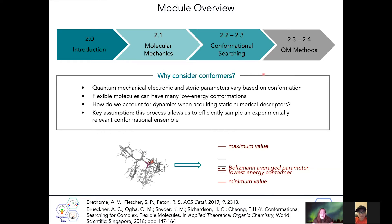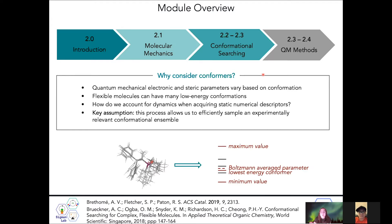Why do we consider conformers? Quantum mechanical electronic and steric parameters — the molecular descriptors that we use in our statistical modeling workflow — can vary quite a lot based on conformation. This is particularly true for flexible molecules, since they can have quite a large number of low energy conformations that would be relevant for the reaction.